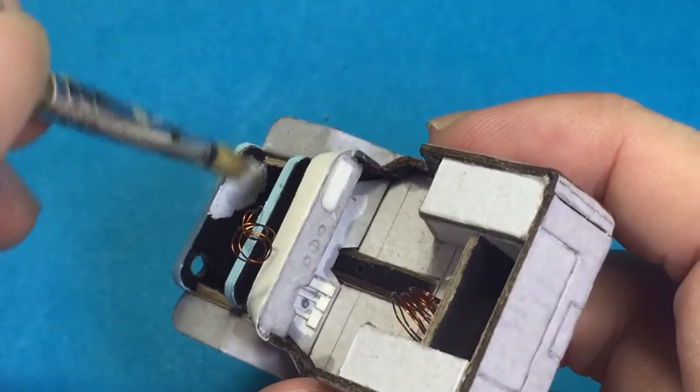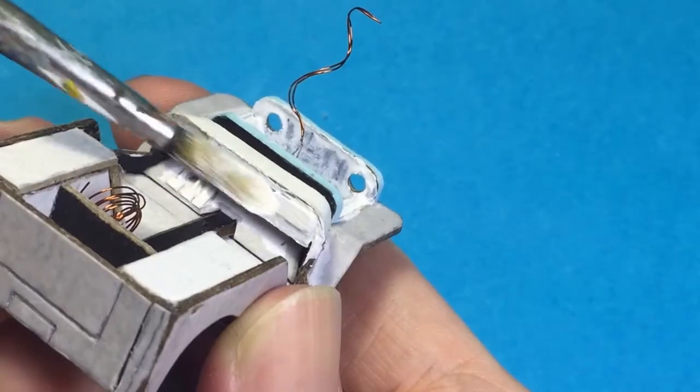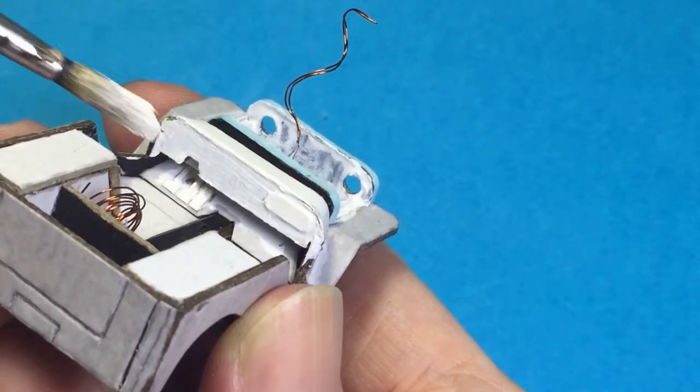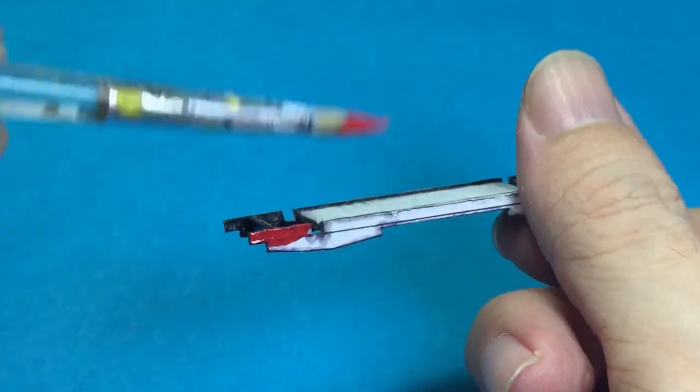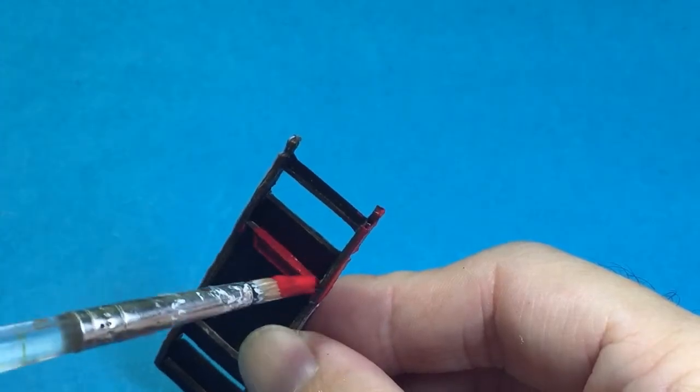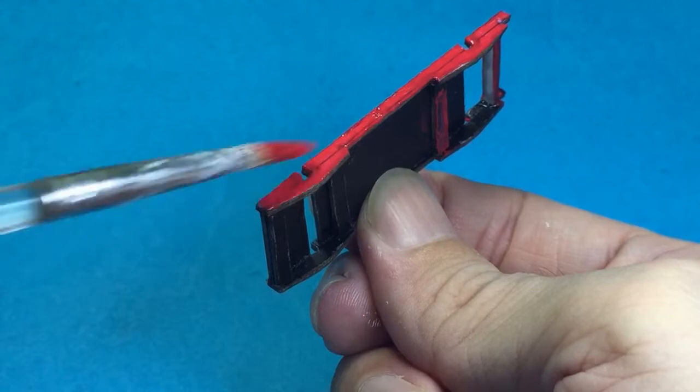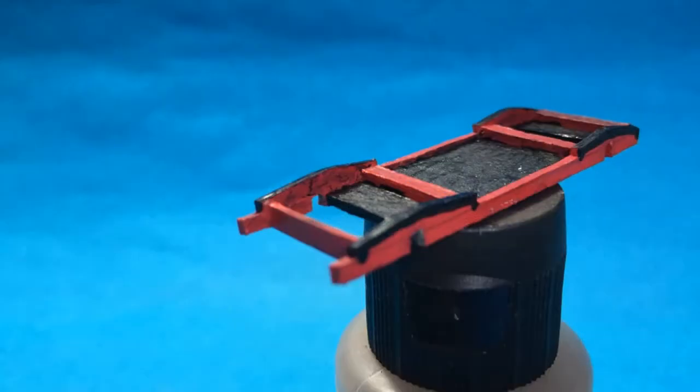It's now time to apply a coat of white acrylic primer to all the exposed parts. I painted the chassis in red acrylic. This is how they look after painting.